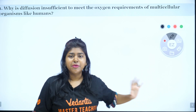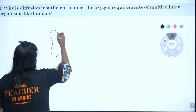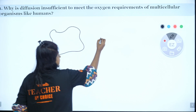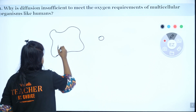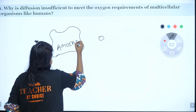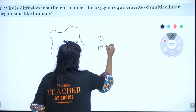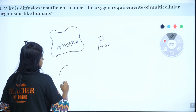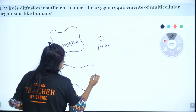Unicellular organisms like amoeba — this is amoeba. Here is a food particle. What does amoeba do? This food is enclosed. This is a unicellular organism.